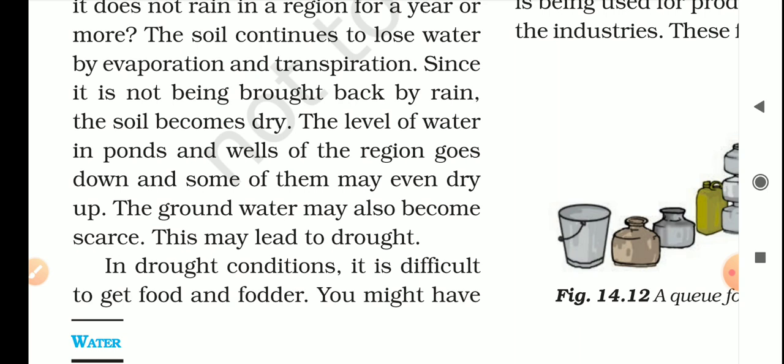In drought conditions, various people, organizations, and governments provide help in the form of water, food products, and medicines to help people get through these difficult situations. Sometimes, if there is a serious drought condition in a country, various international organizations and other countries also provide help in the form of water, food products, and medicines.